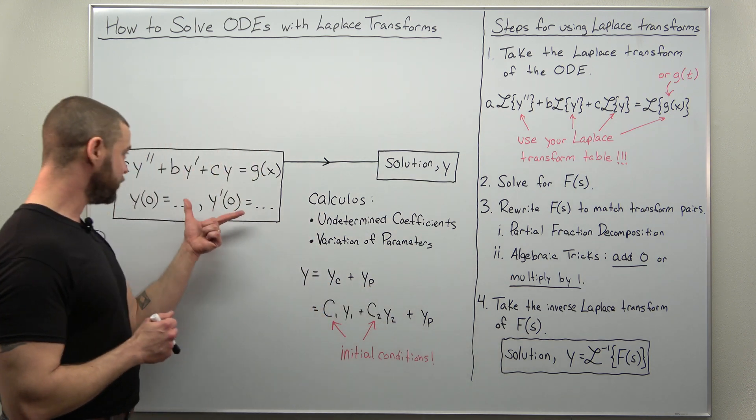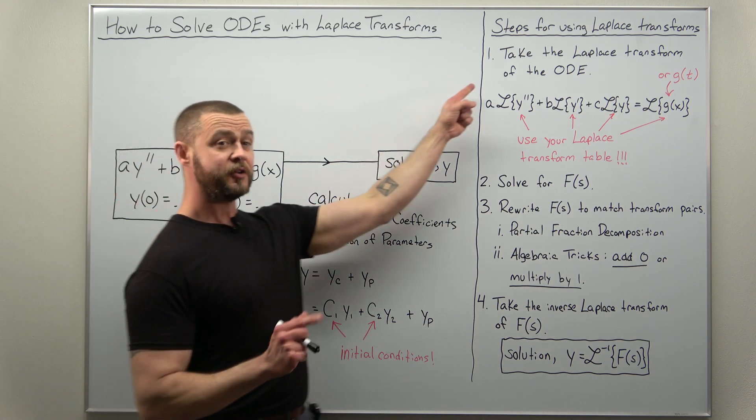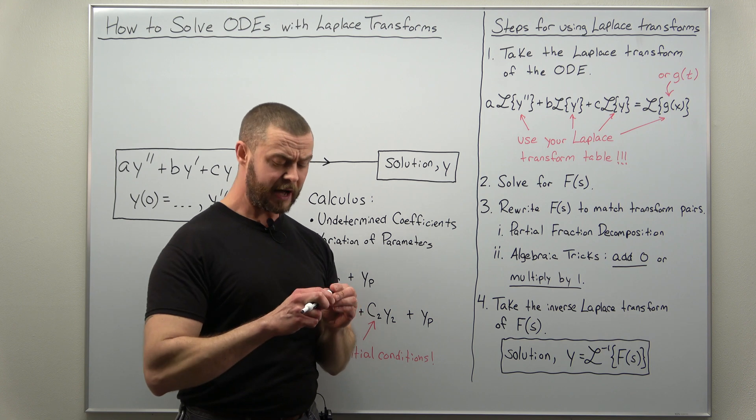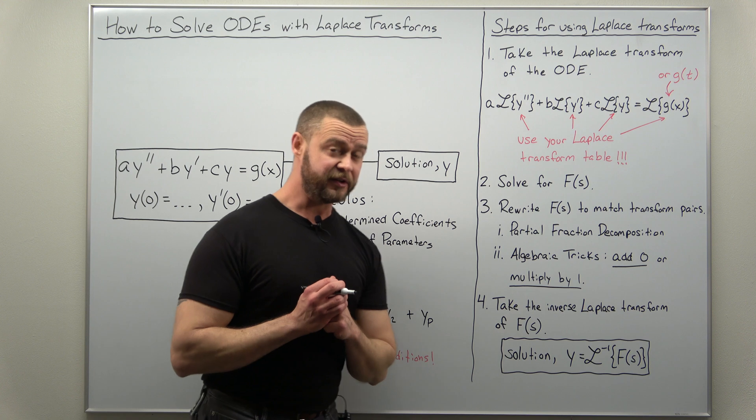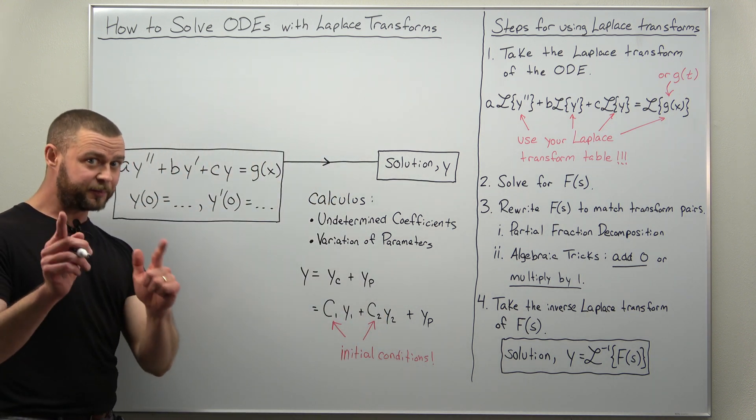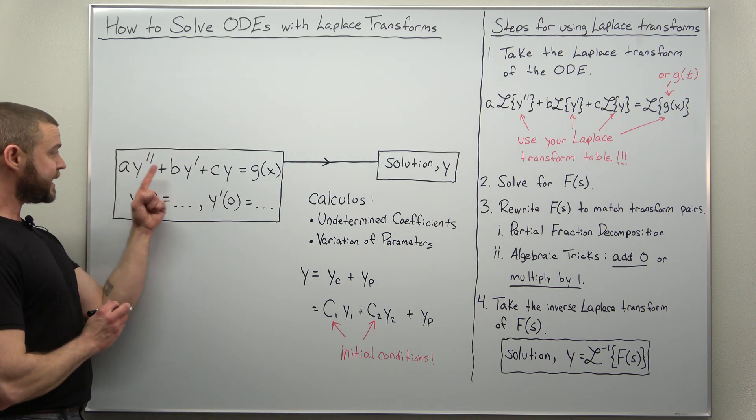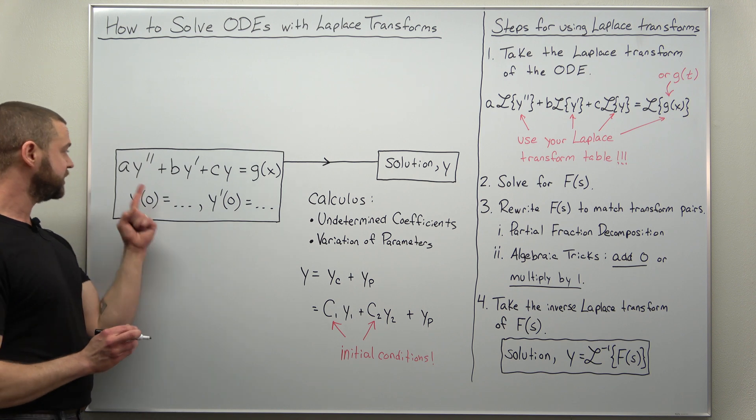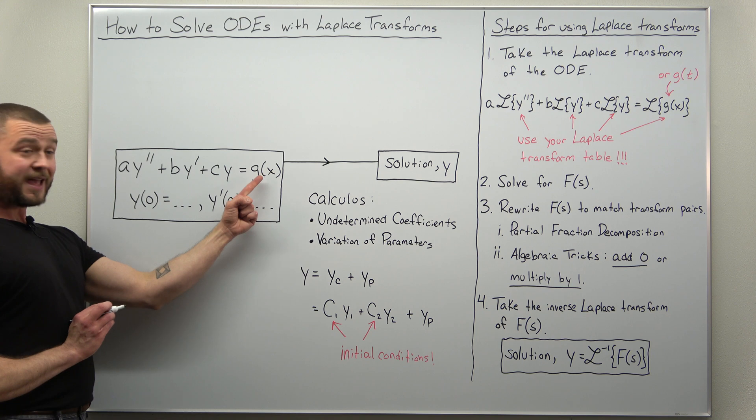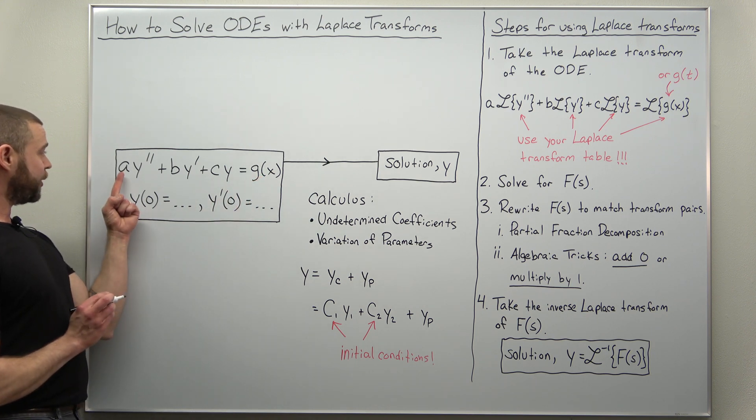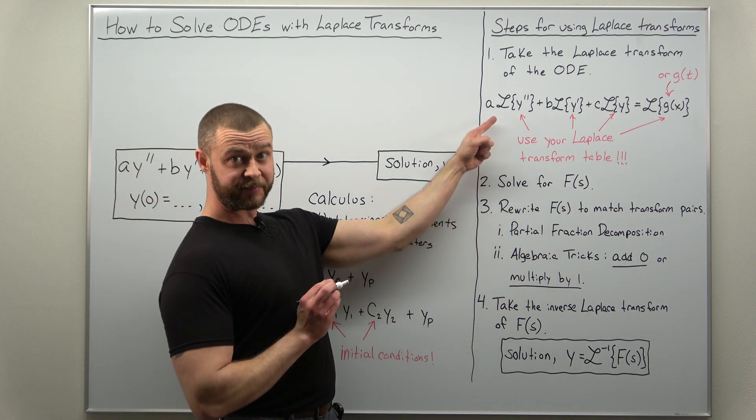So let's go ahead and visualize in this diagram how we're going to solve this differential equation using Laplace transforms. Now the first step here is we're going to take the Laplace transform of the differential equation. And since the Laplace transform is linear, it's a linear transformation, we can take the Laplace transform of each of the four terms: the second derivative, the first derivative, the function, and the non-zero right-hand side. And we can even pull the constants a, b, and c out front, so your end result looks something like this.